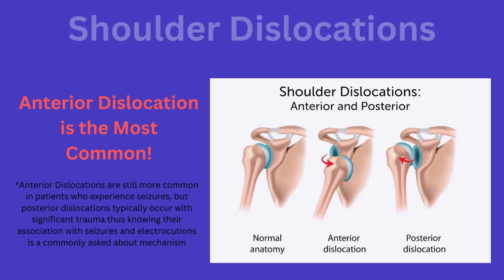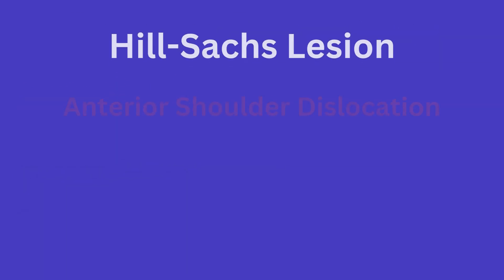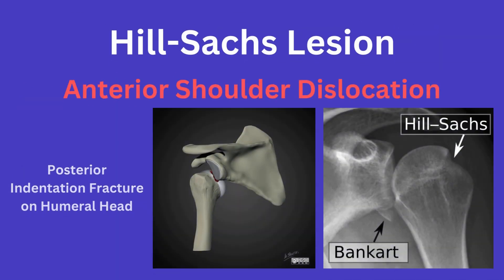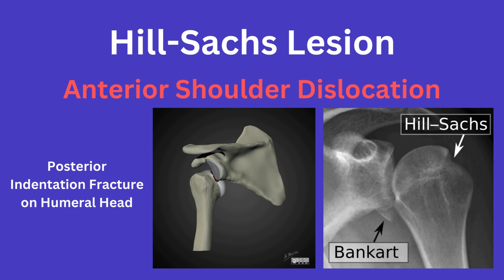When the shoulder is dislocated anteriorly, the posterior aspect of the humeral head can be impacted by the glenoid of the scapula, leading to an indentation fracture. This is the so-called HILSACS lesion, which you see here.